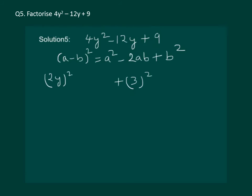Now, if we write minus 2 into 2y into 3, we get 2y whole square minus 12y plus 3 whole square, which is same as our question.